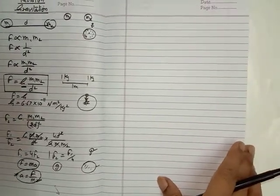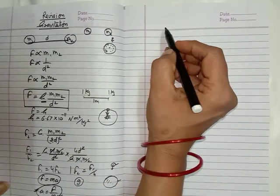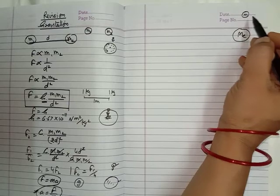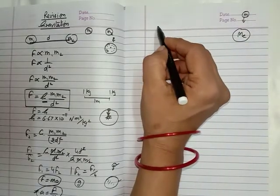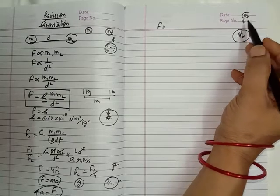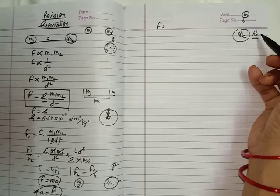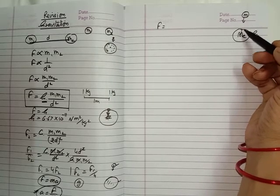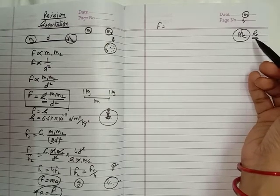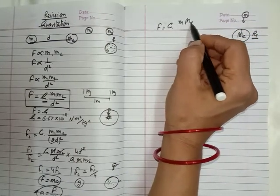How can we find the value of acceleration due to gravity? For the earth, I am going to explain the acceleration due to gravity on the surface of the earth. Suppose this is the earth having mass Me, and this is the object having mass M, and it is free to fall on the earth. The force of attraction acting between these two objects - suppose the radius of the earth is Re. The distance between the earth and the object is approximately Re.